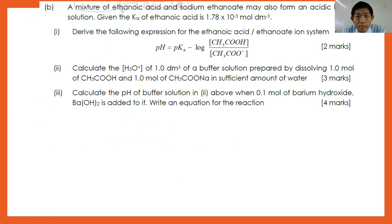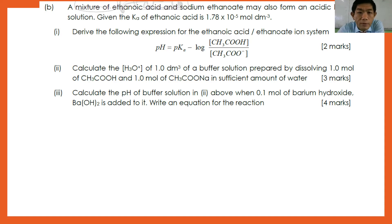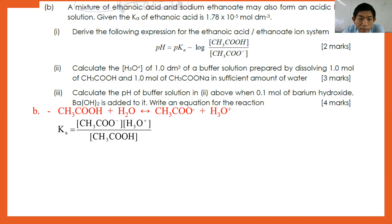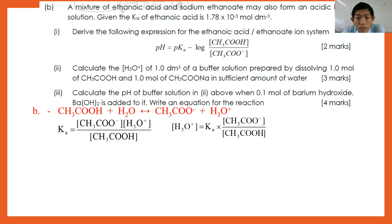Part B: a mixture of ethanoic acid and sodium ethanoate may also form an acidic buffer solution. Given Ka of ethanoic acid is 1.78 × 10⁻⁵. Number one: derive the expression pH = pKa + log([CH3COO⁻]/[CH3COOH]). Number two: calculate the pH of a 1.0 dm³ buffer solution prepared by dissolving 1.0 mol dm⁻³ ethanoic acid and 1.0 mol dm⁻³ sodium ethanoate in sufficient water. And number three: calculate the pH after 1.0 mol of barium hydroxide is added, writing the equation for the reaction.